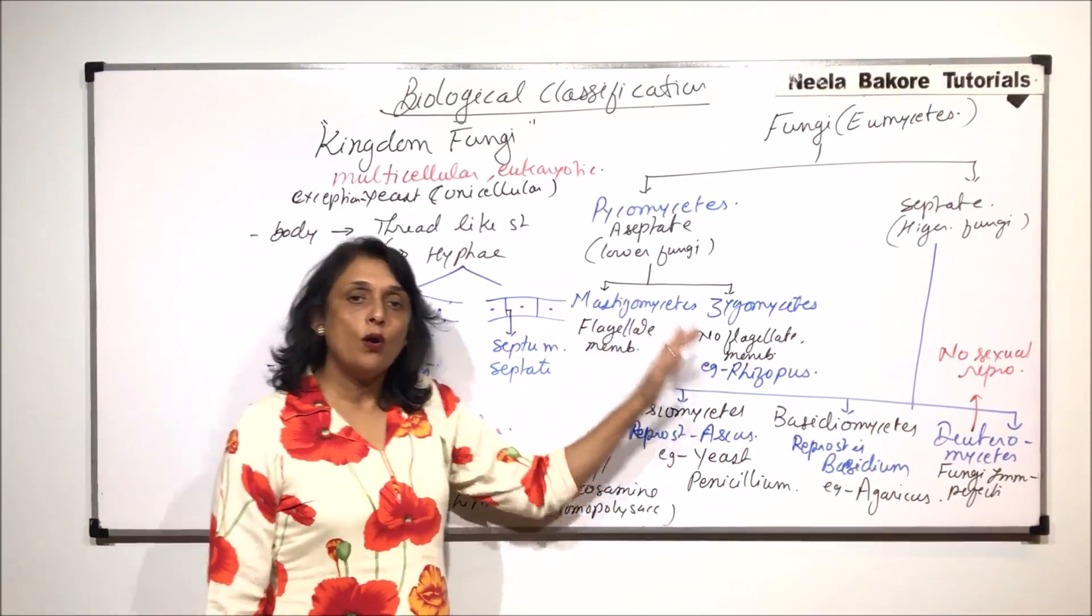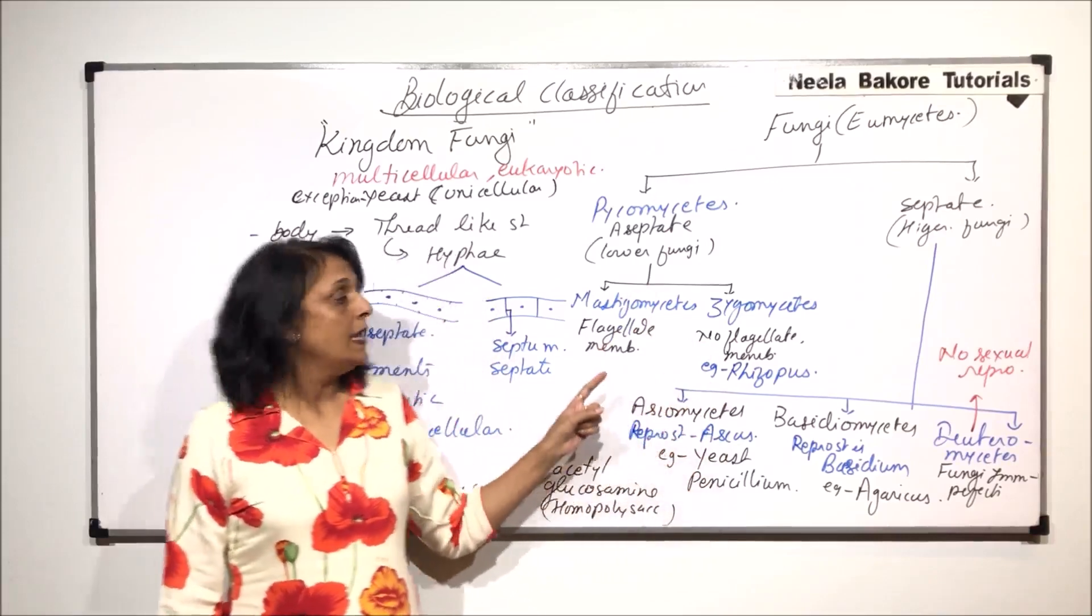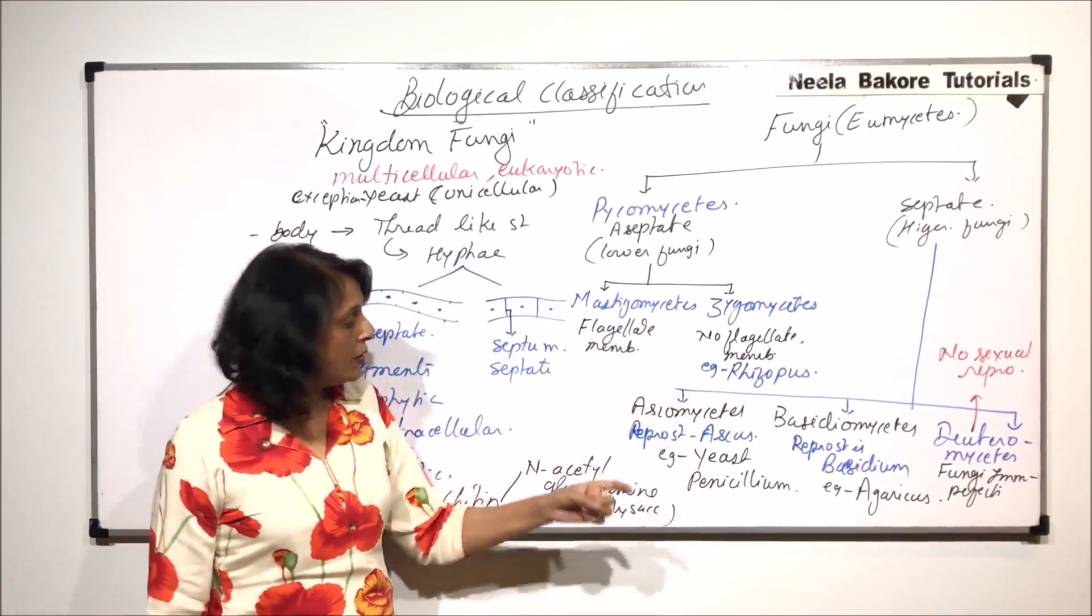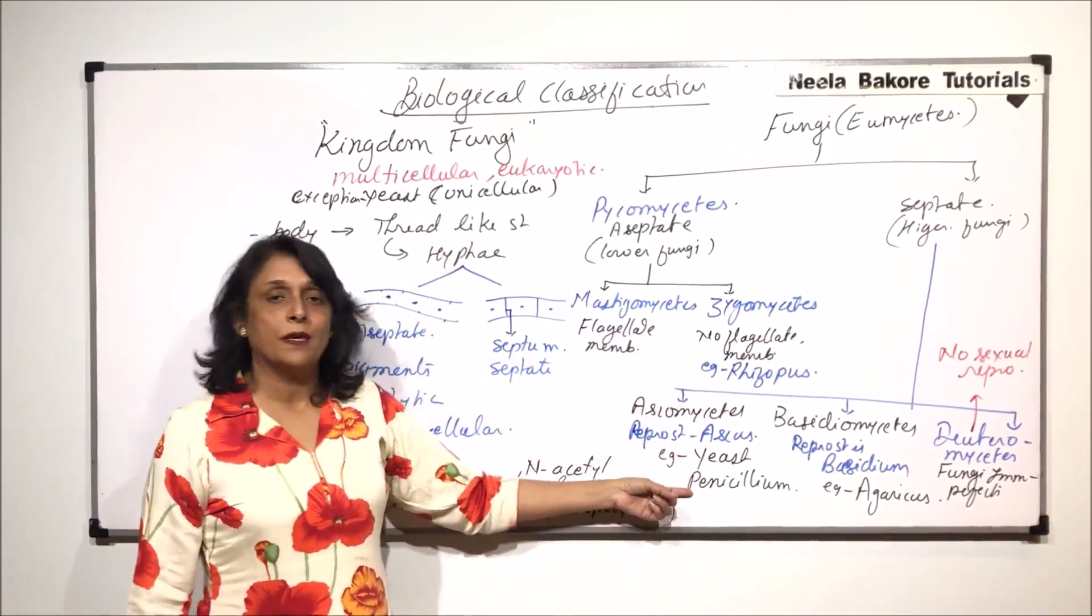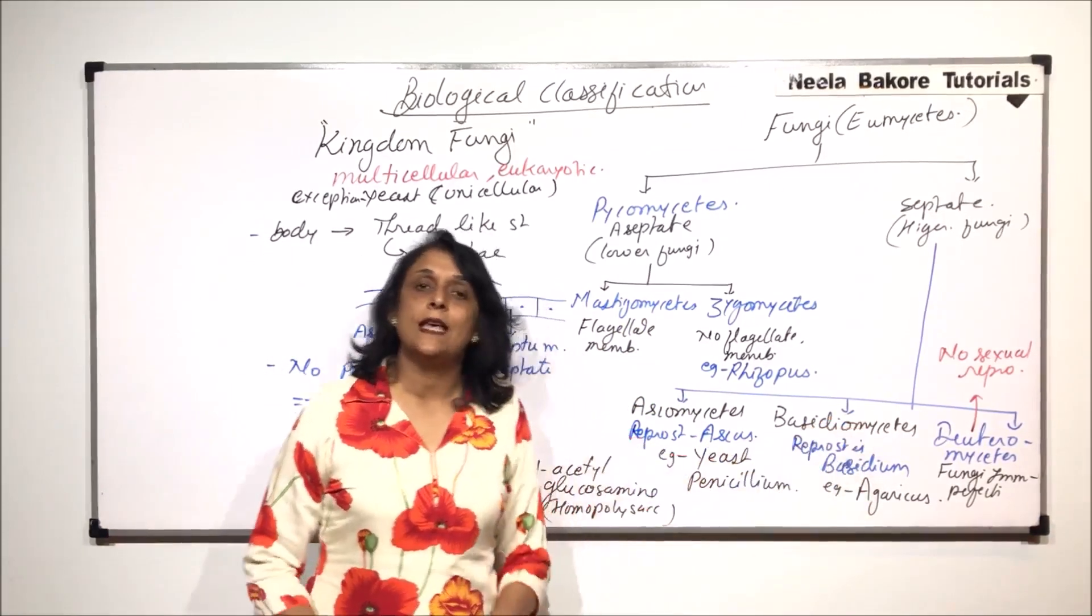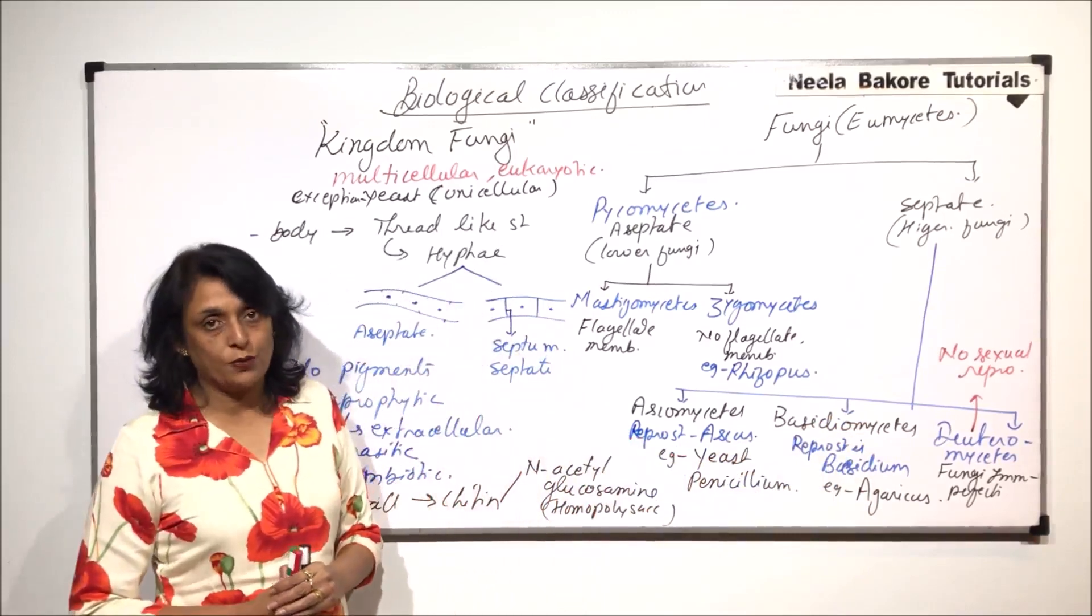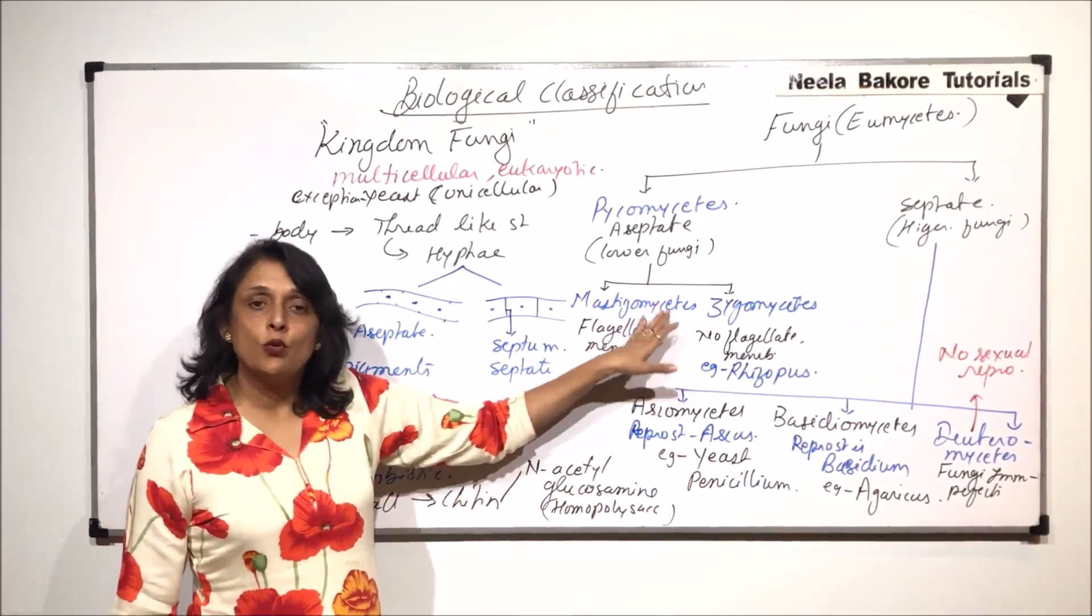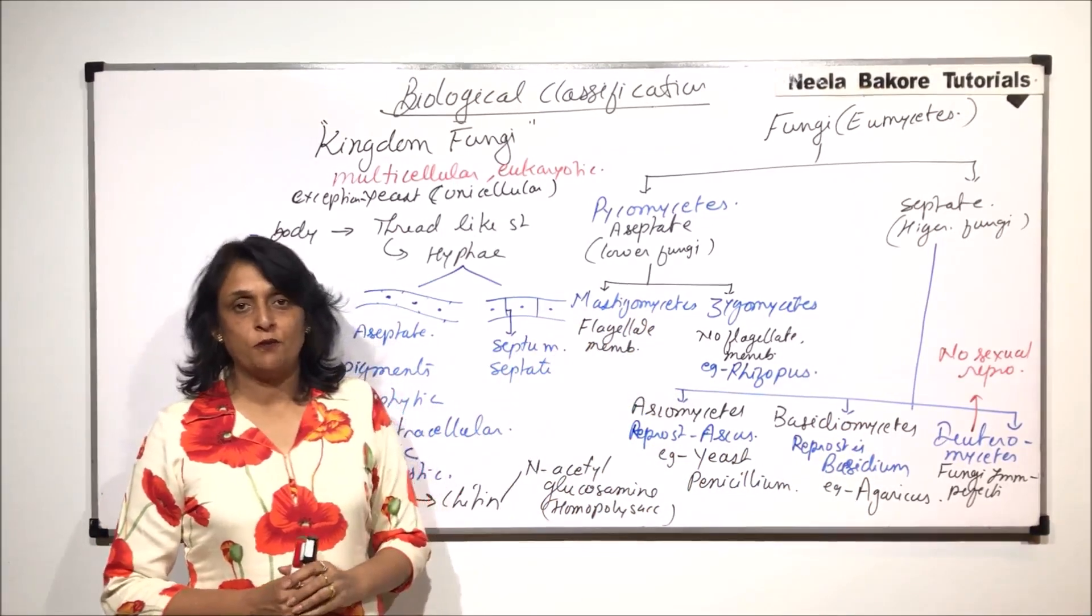So we'll be talking about all of these in detail. And we'll take up these examples. Like we'll be talking about rhizopus and mucor. Then we'll take yeast and penicillium. We'll talk about agaricus also. And we'll take certain examples of deuteromycetes also. So from the next video, we'll start with individual groups and the members in that group.